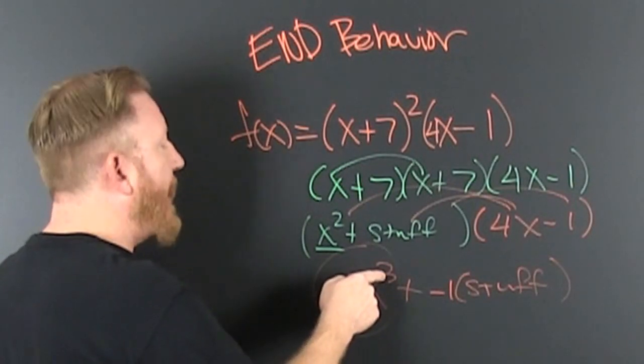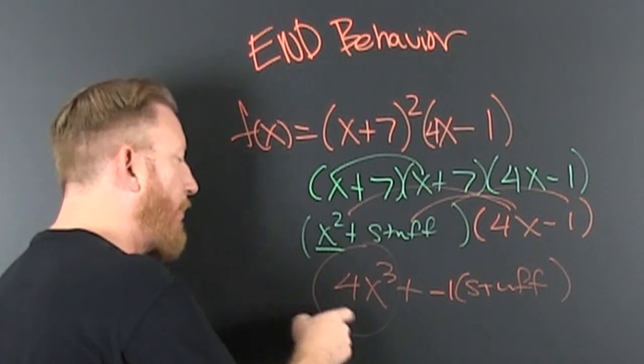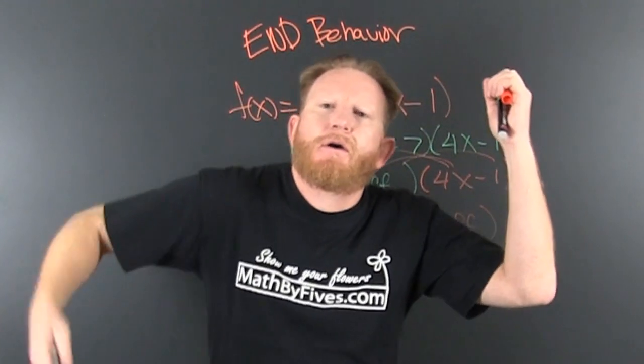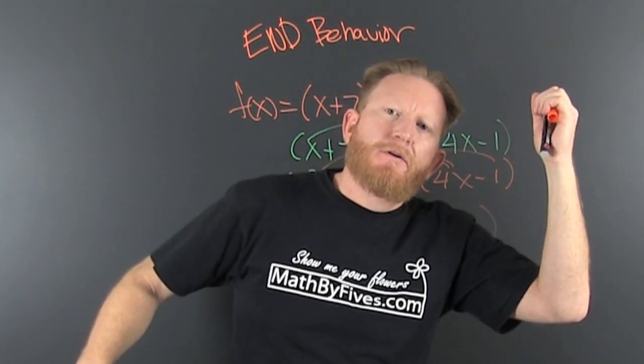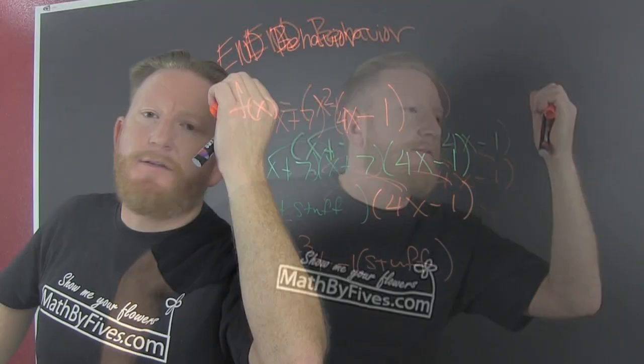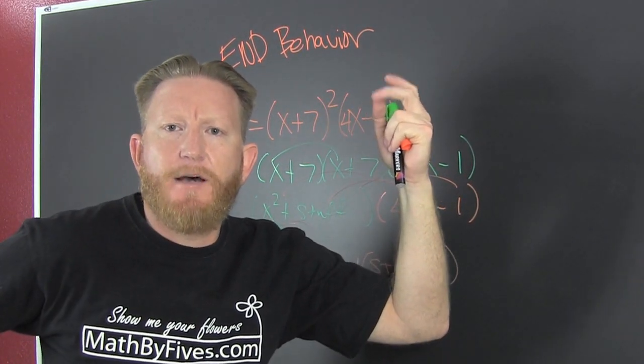That's odd degree and the coefficient is positive. So, how's it go? Look at the end behavior video for that. That means it's mixed and it ends up.